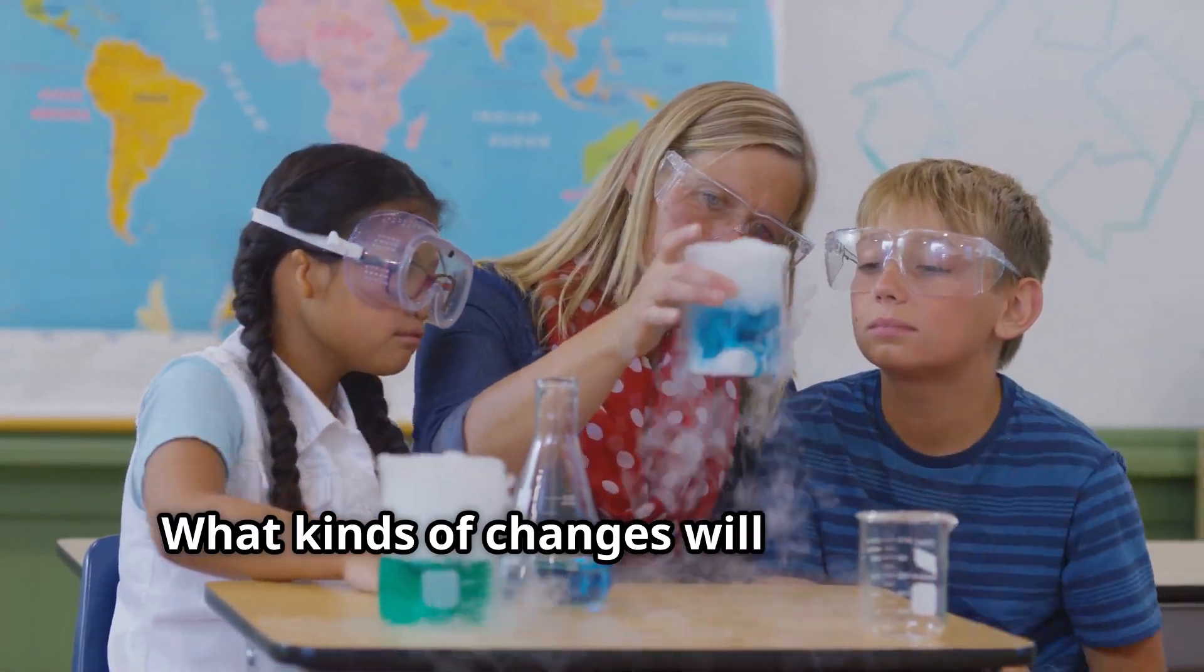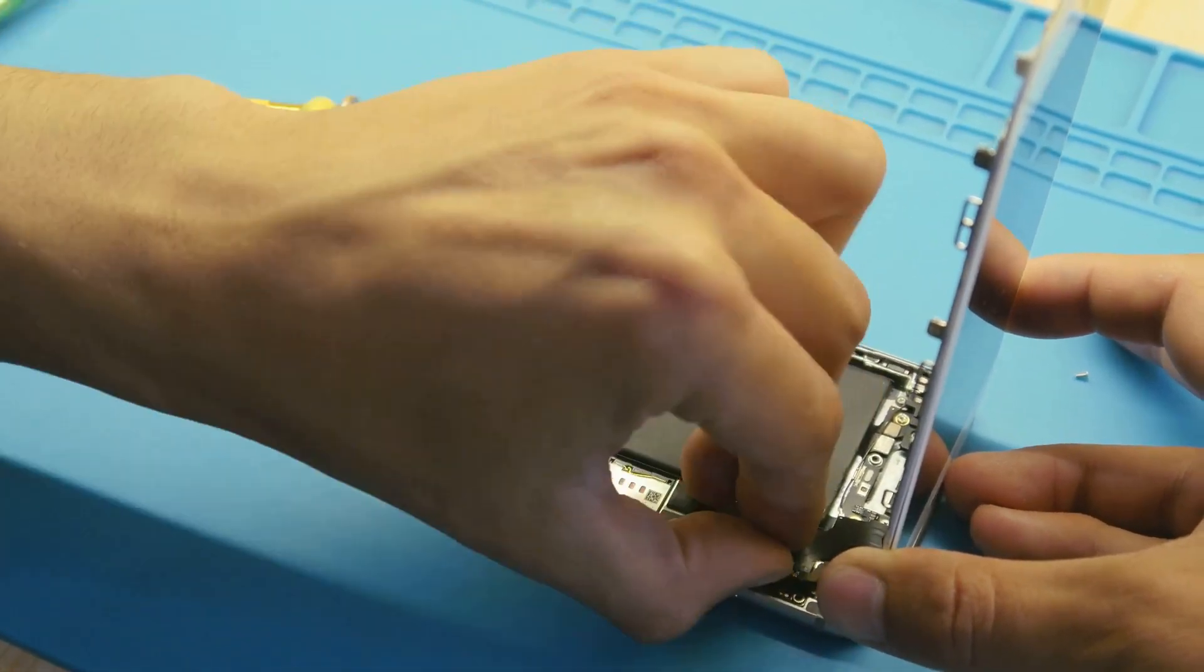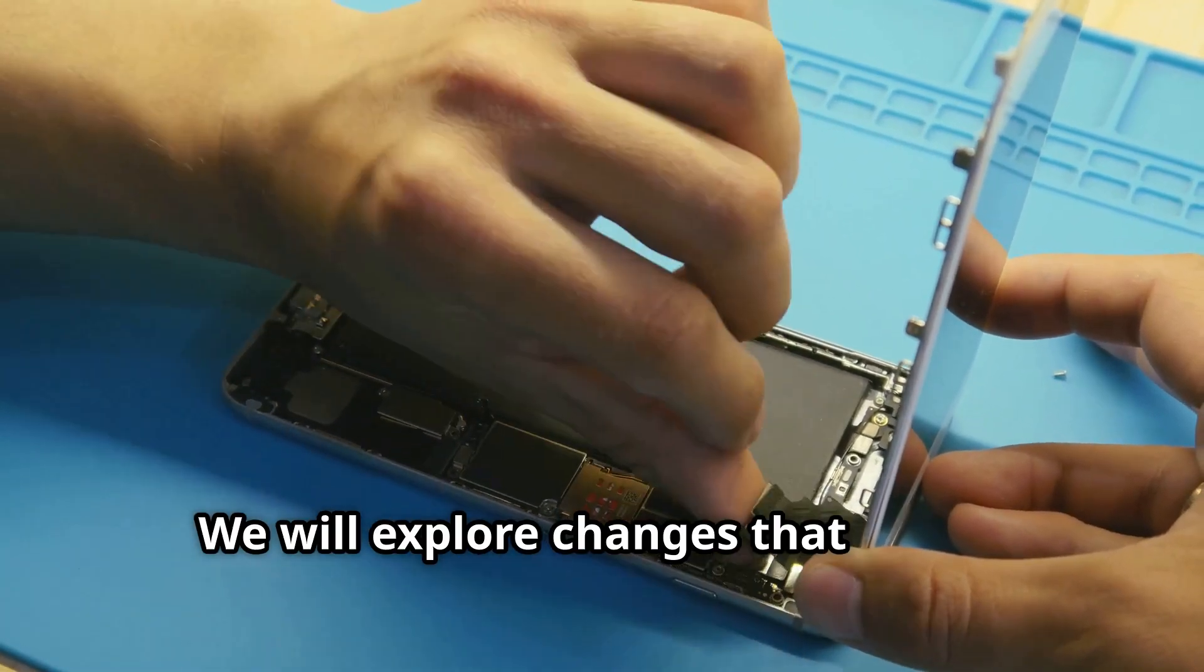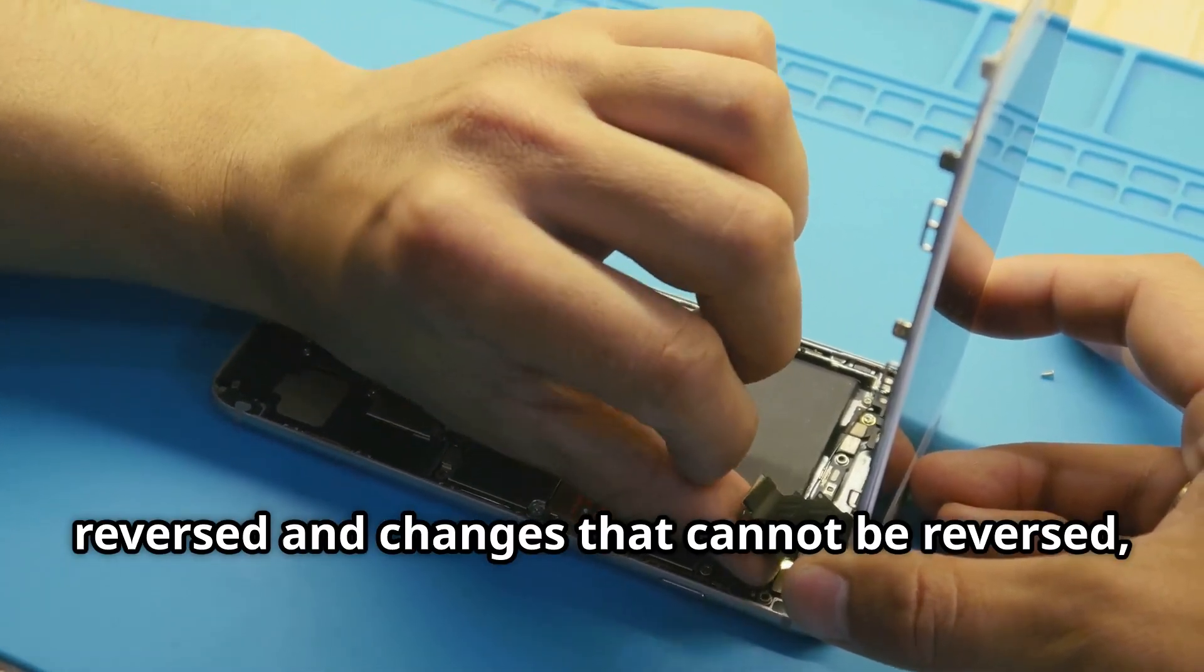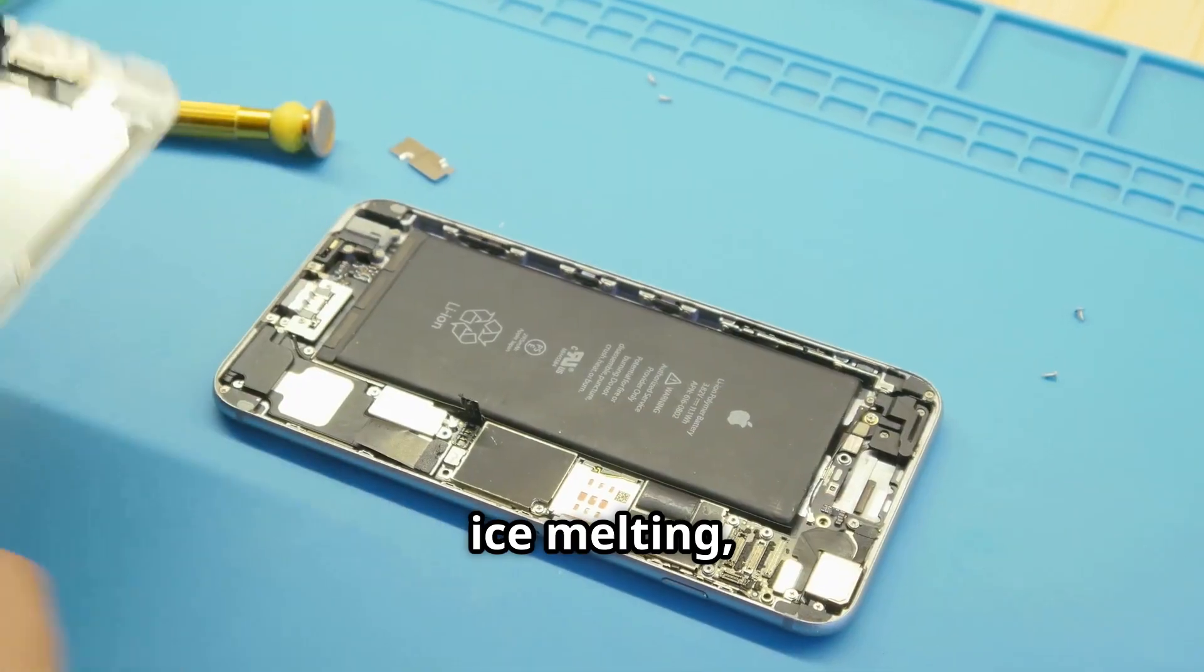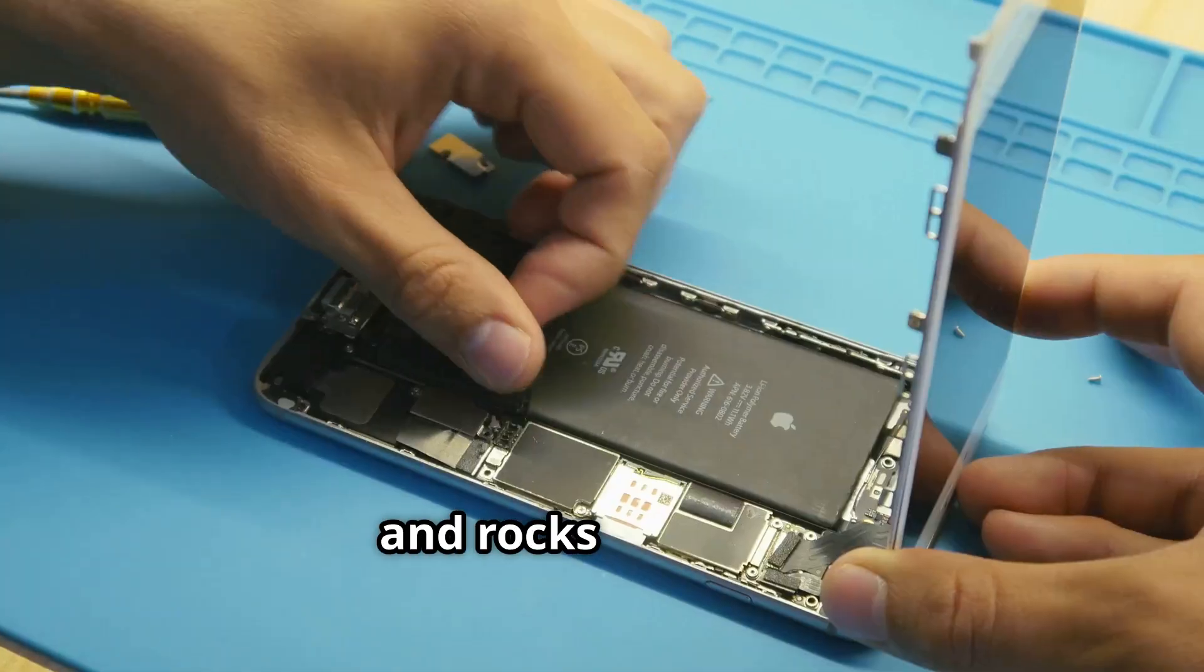What kinds of changes will we explore? We will explore changes that can be reversed and changes that cannot be reversed, like batteries running out, ice melting, fruits ripening and rocks breaking.